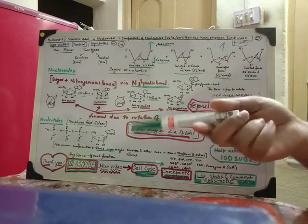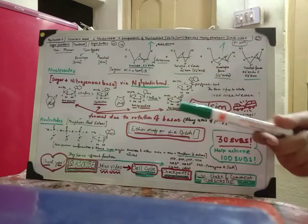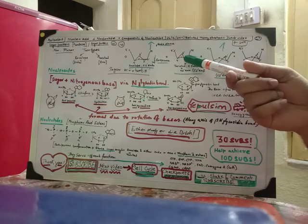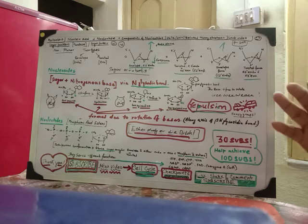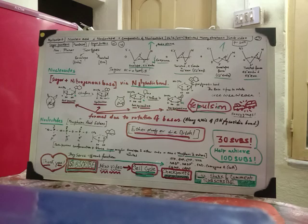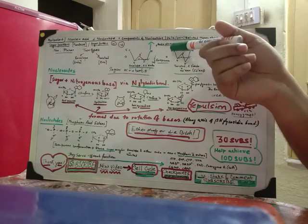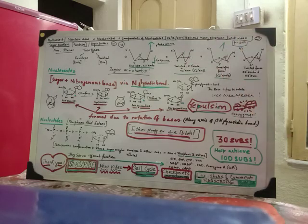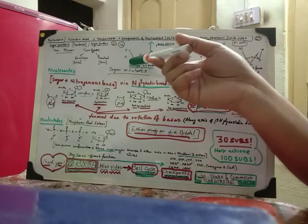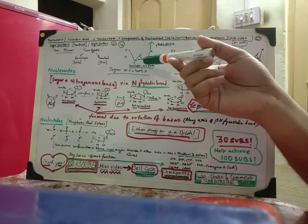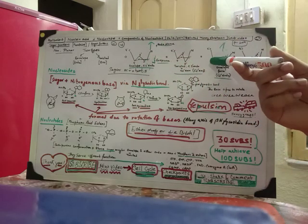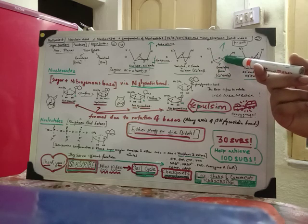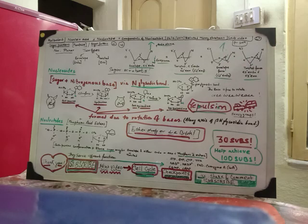Now coming to the twisted form: this form has three atoms which are co-planar in nature, while the other two lie away on opposite sides. For example, 5', 4', and 1' are in the same plane, while 3' and 2' are away. Or in another example, 4', 3', and — taking 4', 2', 1' — these are in the same plane.